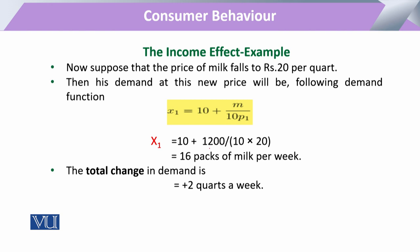As we have already calculated, if the consumer's income remains the same — the nominal income — but the price changes, the consumer will shift demand from 14 to 16, gaining two additional units.